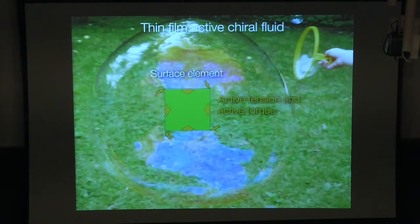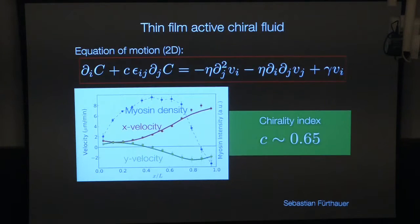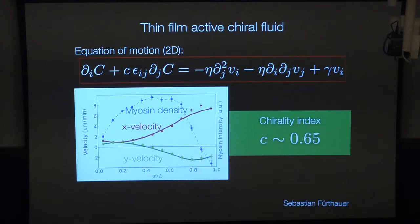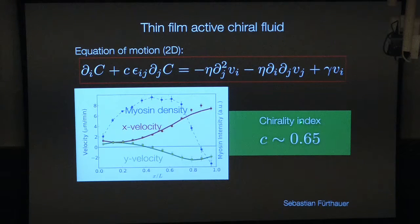What does that mean for the active myosin cortical layer? An isolated piece of the cortex would like to mainly contract but also slightly rotate, and the direction of rotation is set by the chirality of the molecular interactions. This can account for both the X and Y components of the flow field: increased myosin in the anterior region and decreased myosin in the posterior region generates these X and Y velocity components. We can recapitulate those, and in doing so determine this dimensionless parameter, which here has a value of approximately 0.65.